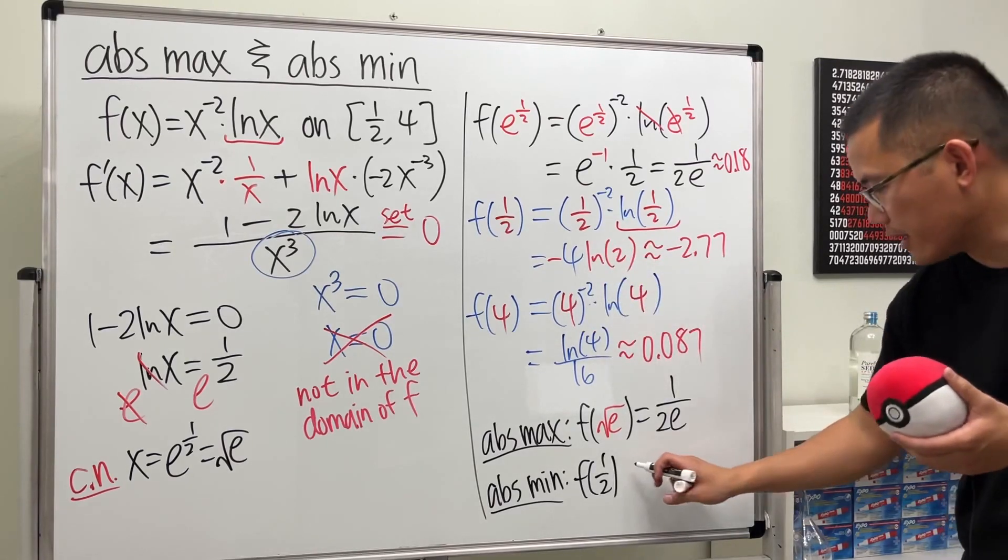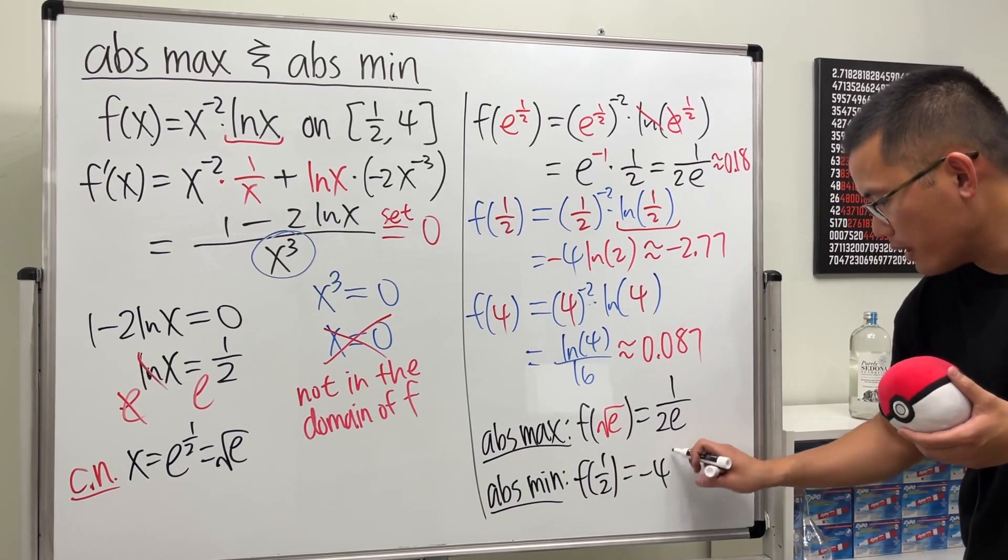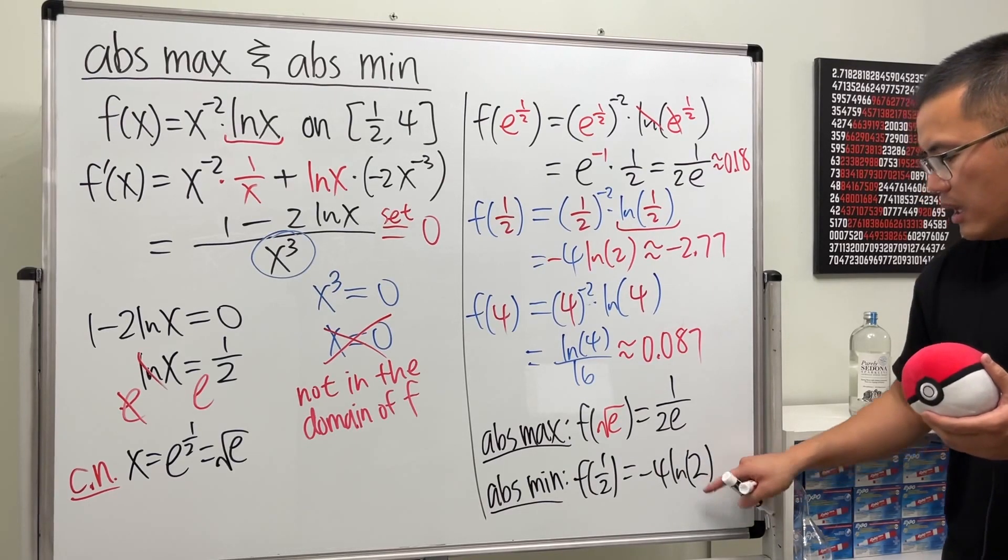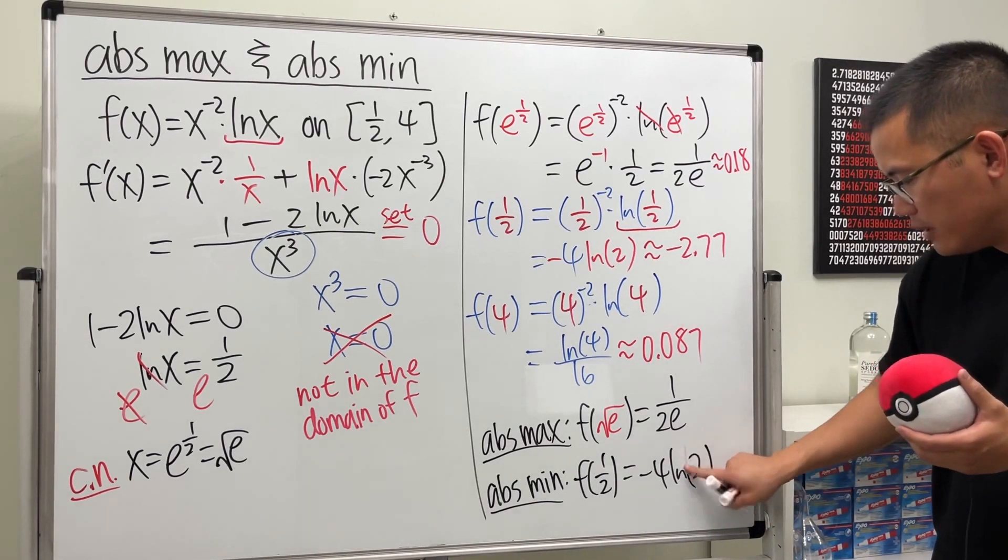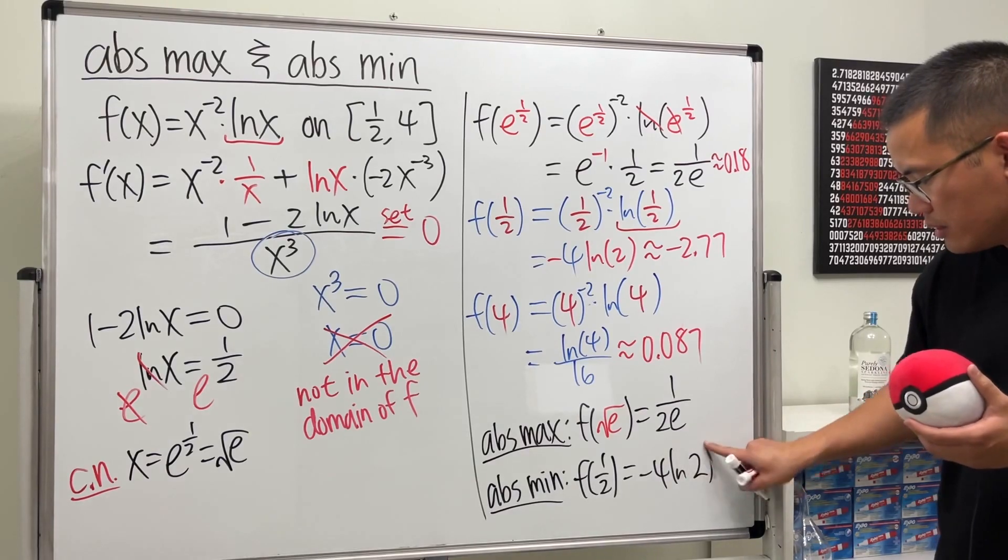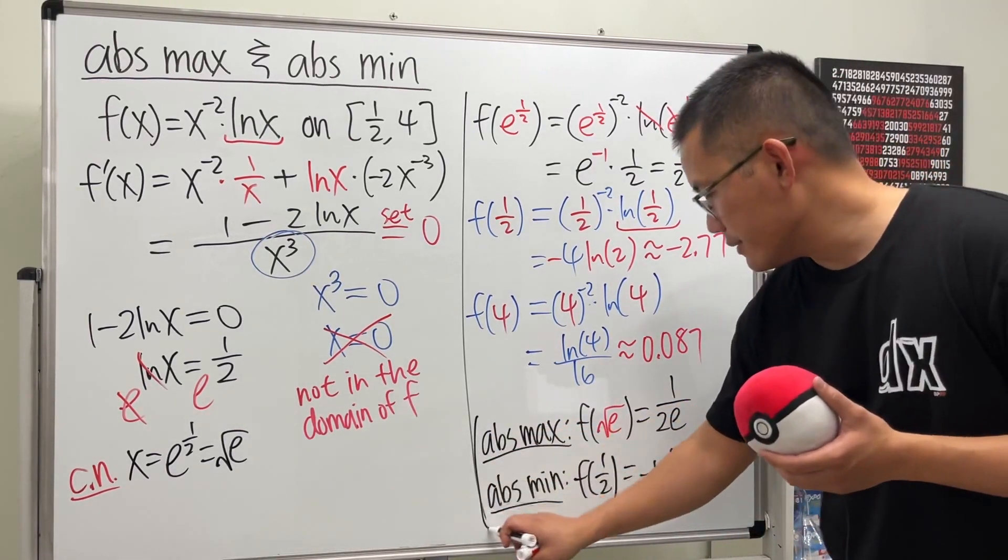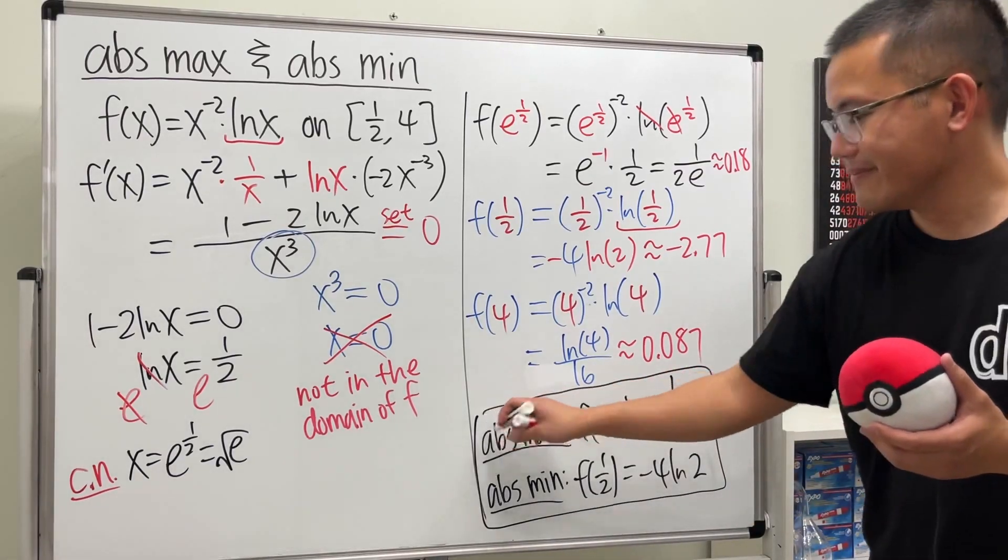And for the absolute minimum is that, which is f at 1 half. And I will write it down like this: negative 4 ln 2. Alright. And you can put parentheses here. But if it's just one thing inside of the ln, you don't have to. This is okay as well. So this right here is it.